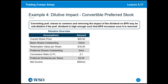There are also 10 million basic shares outstanding. As for the terms of the convertible preferred stock security: the redemption value per share is $18, it comprises 3 million preferred shares outstanding, and the conversion ratio is 2-to-1 — common to preferred. So for every one share of preferred stock there are two shares of common, meaning the 3 million preferred shares would convert to 6 million common shares. The preferred dividends per share is $3, and current net income is $50 million.